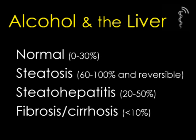Not all those who drink alcohol develop liver disease, and there are four categories of histology that define the severity of the disease. In patients that take excess alcohol, up to 30% will have a normal liver histology. Most — 60 to 100% — will have steatosis, that is fat droplets within the liver, and this is a reversible condition. 20 to 50% will progress to the more severe steatohepatitis or alcoholic hepatitis, and only less than 10% will develop fibrosis or cirrhosis.